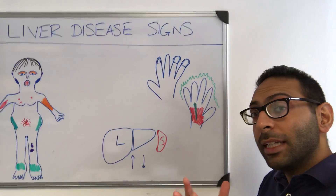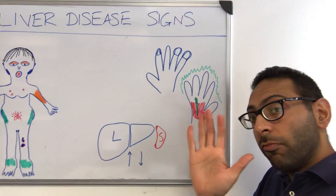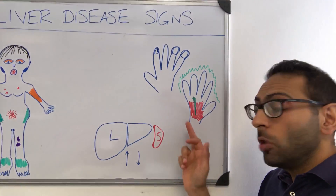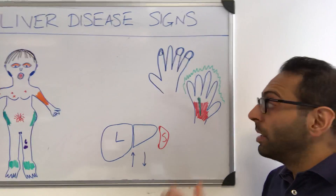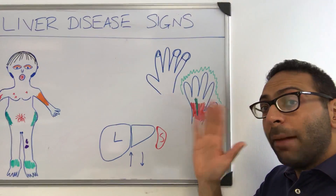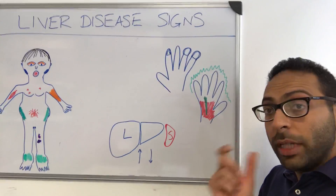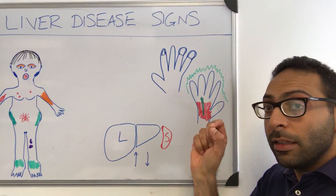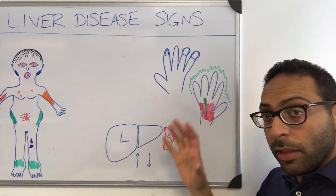If you look at the hands, there are some specific changes. Palmar erythema, where you get reddening of the palm; Dupuytren's contracture, so thickening of the palmar fascia as it runs in the palm itself; and the classic liver flap or asterixis. In terms of nails, there are two key changes: leuconychia — white nails — or clubbing.